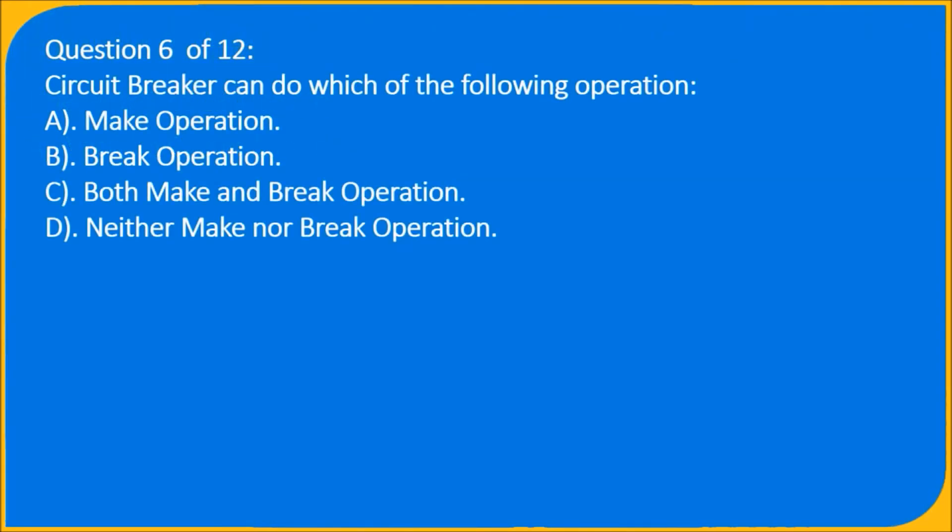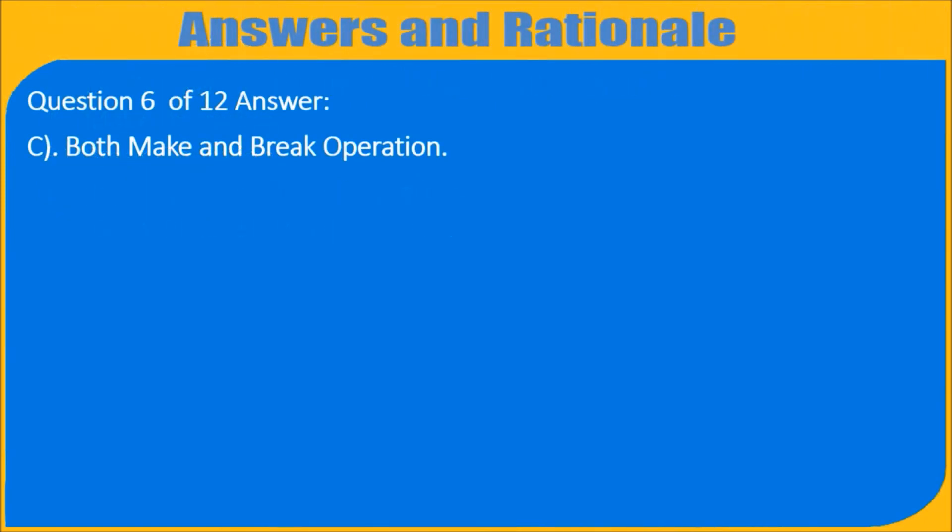Question 6 of 12: Circuit breaker can do which of the following operation? A) Make operation, B) Break operation, C) Both make and break operation, D) Neither make nor break operation. Question 6 of 12 answer: C) Both make and break operation.